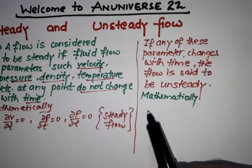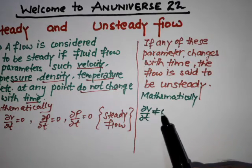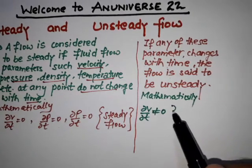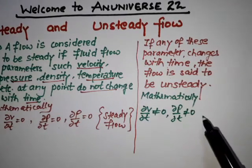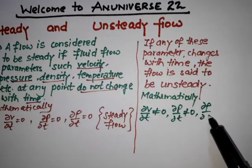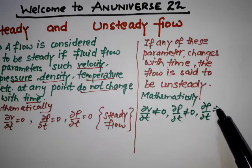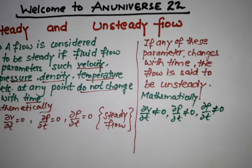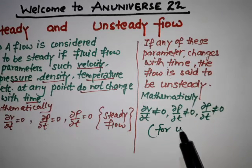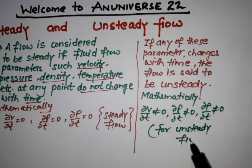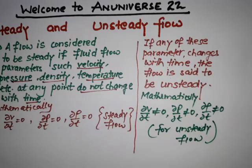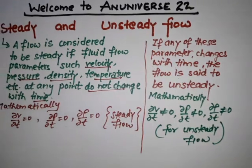In case of unsteady flow, mathematically we can write that ∂v/∂t ≠ 0 and ∂ρ/∂t ≠ 0. So this is for unsteady flow. Friends, in this video we have learned what is the difference between steady and unsteady flow.